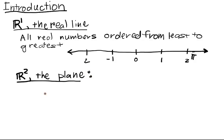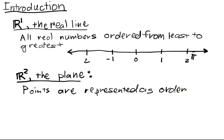So points in R² are represented as ordered pairs. So we'll write them like x₁, x₂. And that's everything in R². And we also have a nice visual representation for this guy that you've seen before.